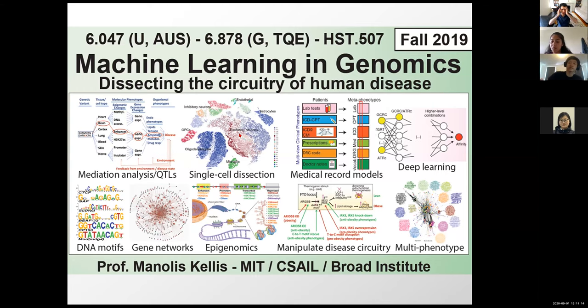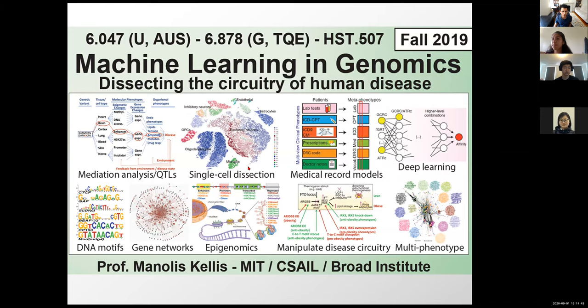This is machine learning in genomics, also known as computational biology — genomes, networks, evolution — and it's all about dissecting the circuitry of human disease: understanding DNA motifs, gene networks, epigenomics, how to manipulate and dissect disease circuitry, how to understand disease across multiple phenotypes, deep learning applications in genomics, how to interpret medical records and data integration across many different modalities, how to understand genomes and genes at the single cell level, and how to carry out mediation analysis and understand how genetic variants act through layers of gene regulation all the way to disease.